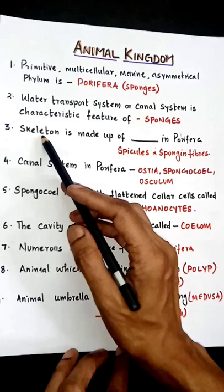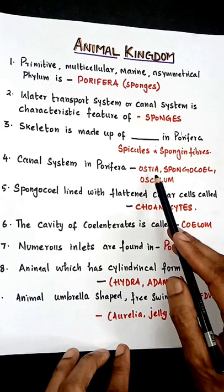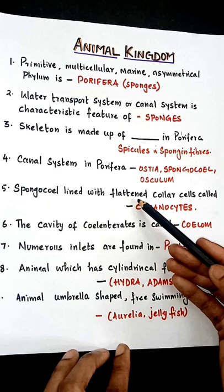The canal system in Porifera is formed by ostia, spongose, and osculum. The spongocoel is the central cavity, and it is lined with flattened collar cells called choanocytes.